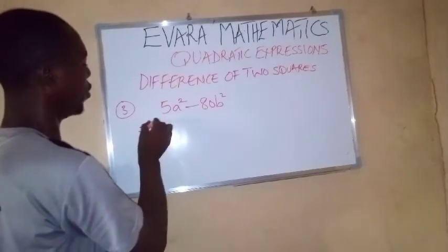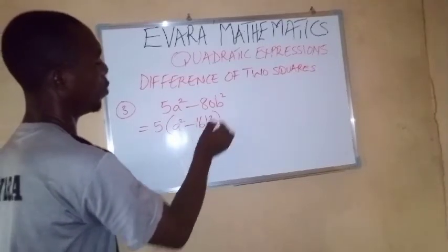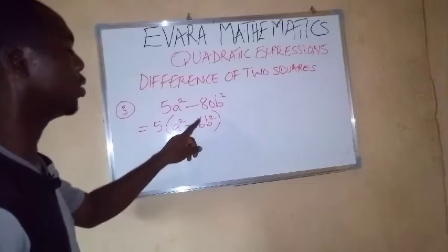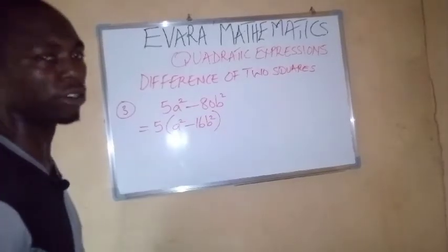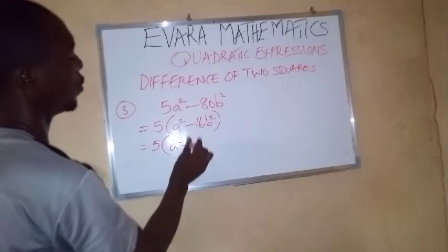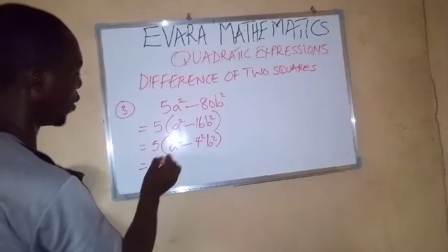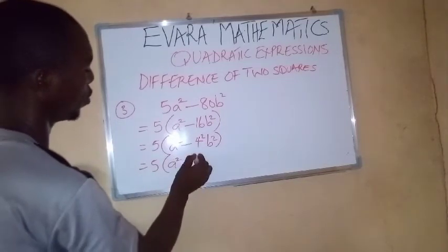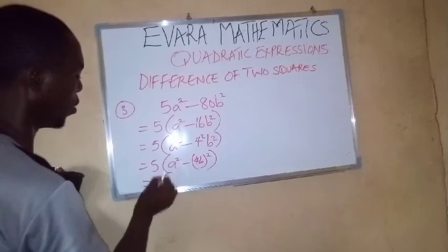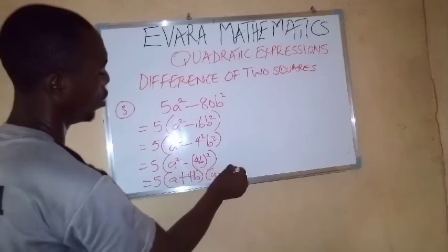5a squared minus 80b squared is the same thing as 5 bracket a squared minus 16b squared. So we can see that what we have in the bracket is the difference of 2 squared because this is a perfect square. 16 is a perfect square. B squared is also a perfect square. So this is 5 bracket a squared. 16 is 4 squared. Then b squared. That is 5a squared minus 4b squared. So now finally, it is going to be a plus 4b. A minus 4b.